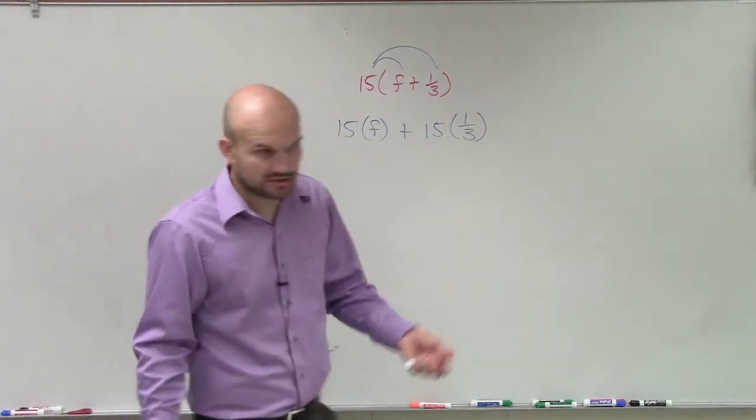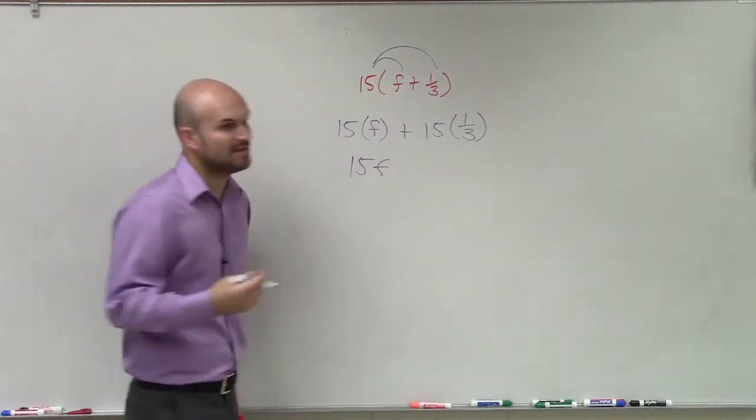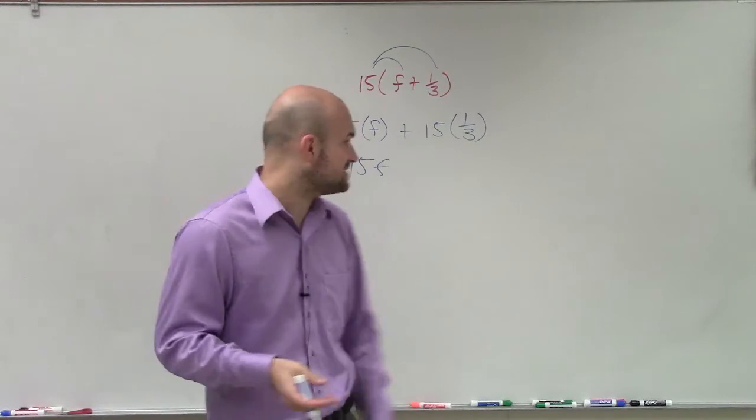15 times a variable is just going to be 15 and that variable. So that's going to just be 15f. We can't combine them any further, so it's just going to be 15 times f.